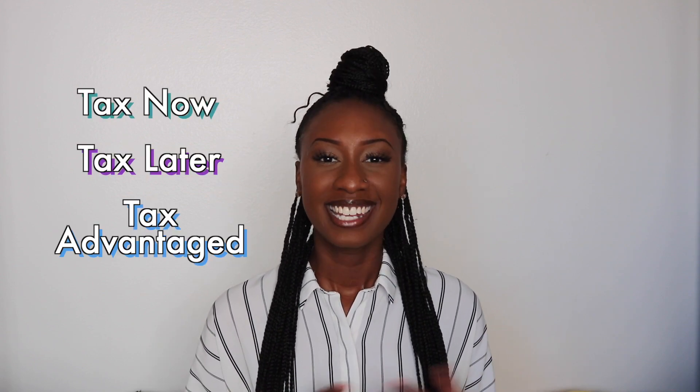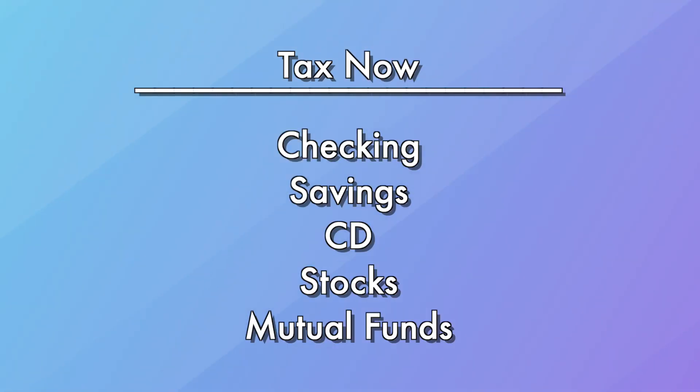We have three tax families in America: TaxNow, TaxLater, and TaxAdvantage. Let's begin by focusing on TaxNow. In a TaxNow account, you have checking, savings, CDs, stocks, and mutual funds. These accounts are where the majority of people save their money.